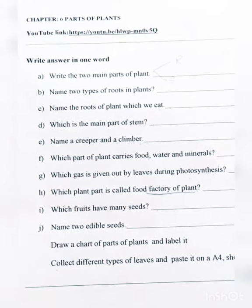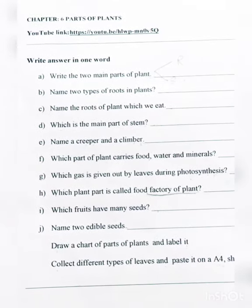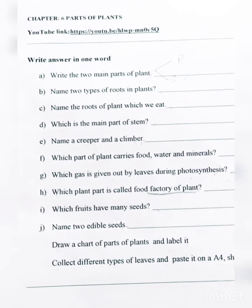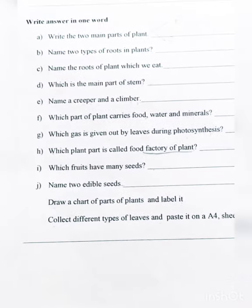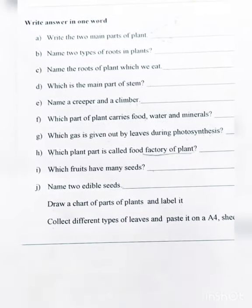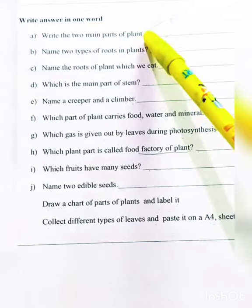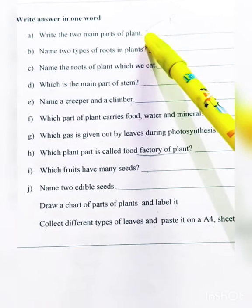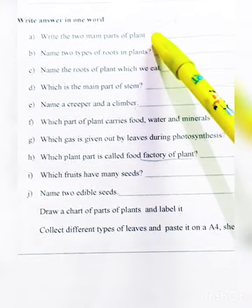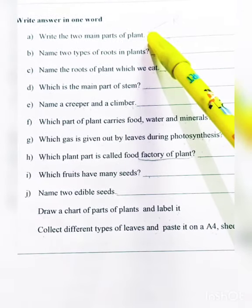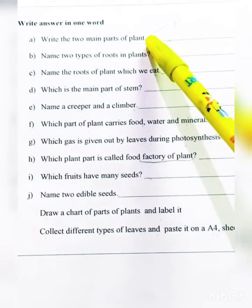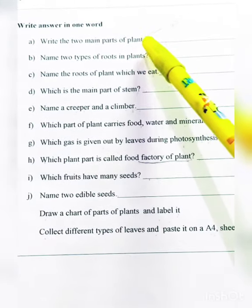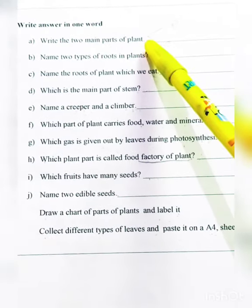Our next chapter is Parts of Plant. Write the two main parts of a plant. The two main parts of a plant are root and shoot. Root and shoot are the most important parts of a plant.